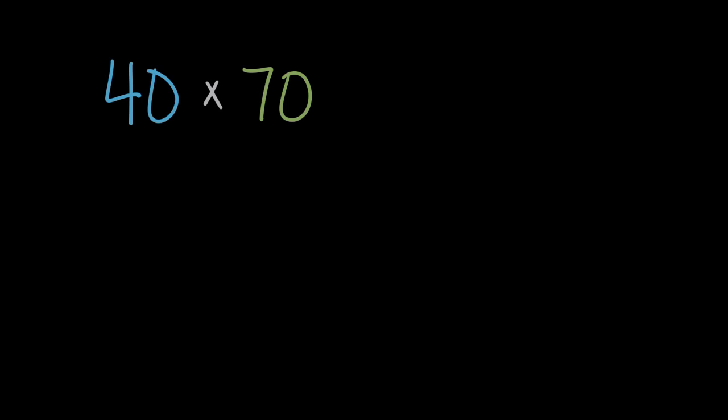So another way is to stick with multiplication, but see if we can break these numbers up, this 40 and this 70, decompose them, break them up in some way to get numbers that might be a little easier to multiply with. For me, multiplying by 10 is the easiest number because I know the pattern to add a zero. So I'm going to break up 40 and say instead of 40, four times 10. Four times 10 and 40 are equivalent, they're the same thing, so I can replace the 40 with a four times 10.